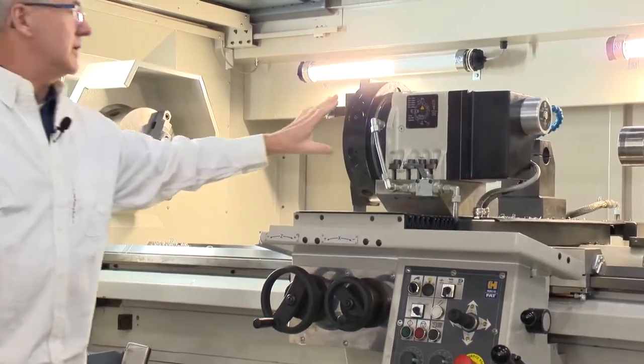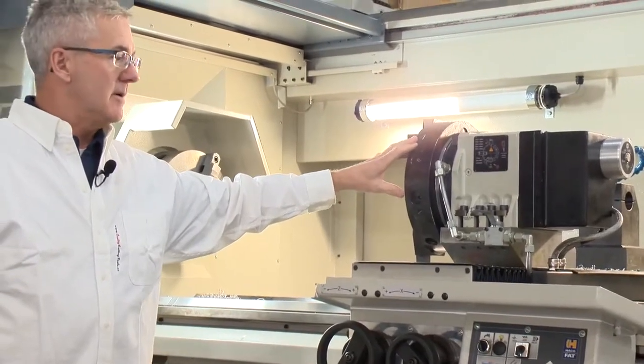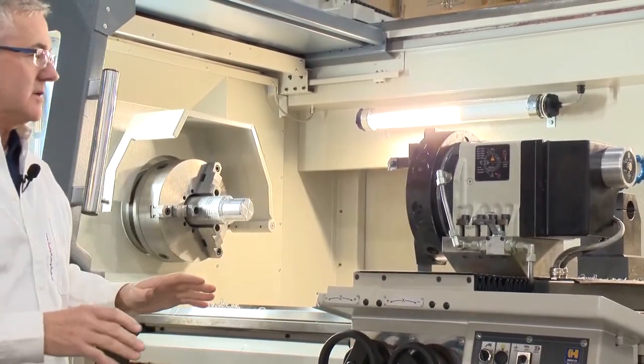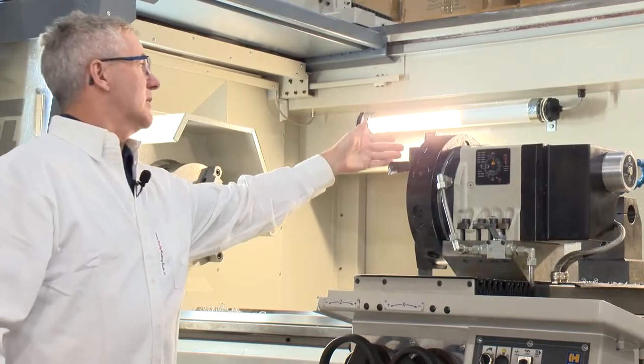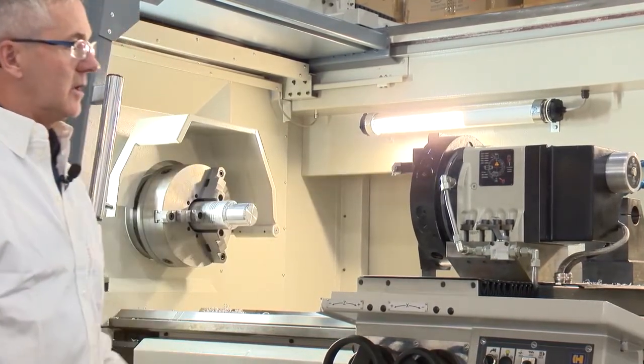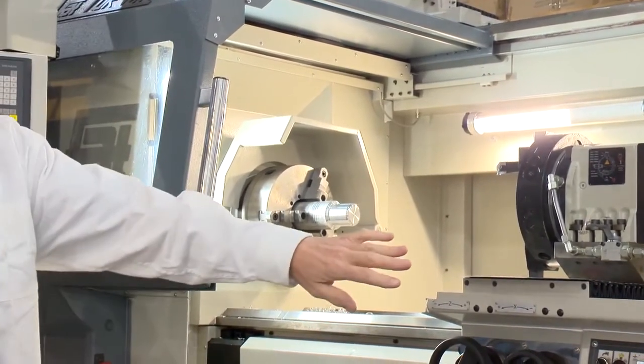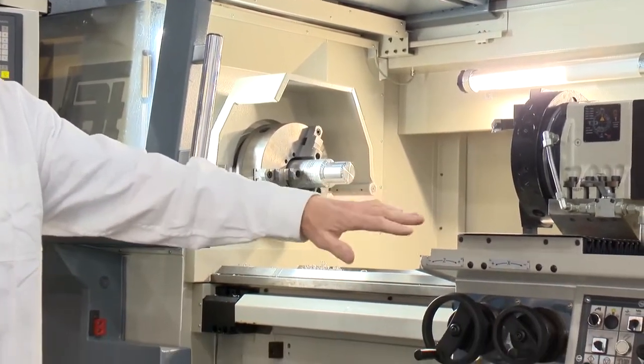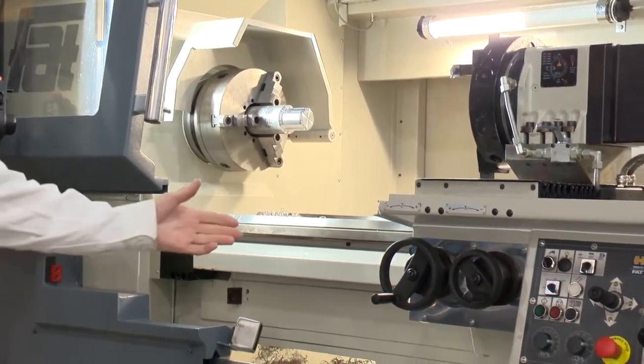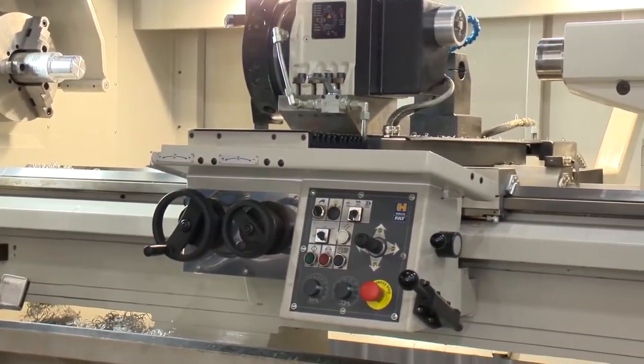This machine we put an 8-station power turret on. It comes standard with a multi-fix, just a C-size multi-fix. On the back we have a boring bar holder with coolant through. We've got a steady rest on here. It's got the power outlet for a chip conveyor, so it's a plug-and-play chip conveyor. This unit we brought in with just a chip pan and a coolant pump.